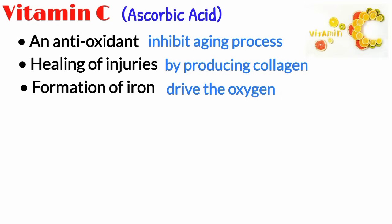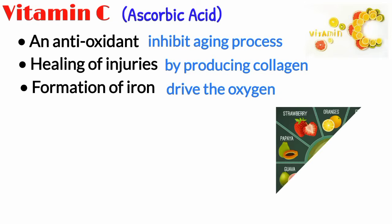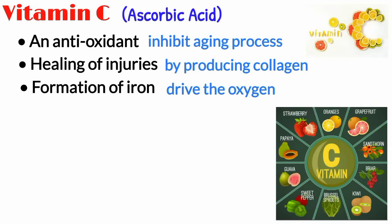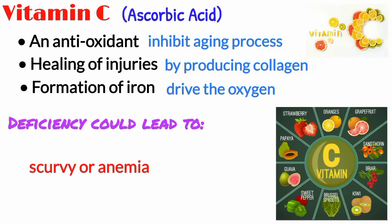It is found in citrus fruits and many vegetables like Brussels, tomatoes, potatoes, spinach, and cabbage. Its deficiency in the body could lead to scurvy or anemia.